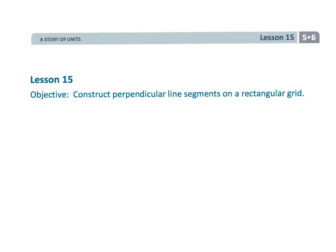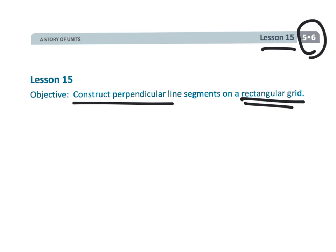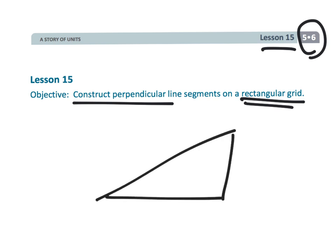That wraps up fifth grade module six lesson 15. We are constructing perpendicular line segments on a grid using our slope triangle — there it is, with a nice 90 degrees.